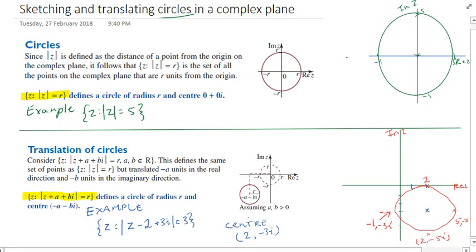And definitely label the centre, which would be 2, 2, negative 3i.